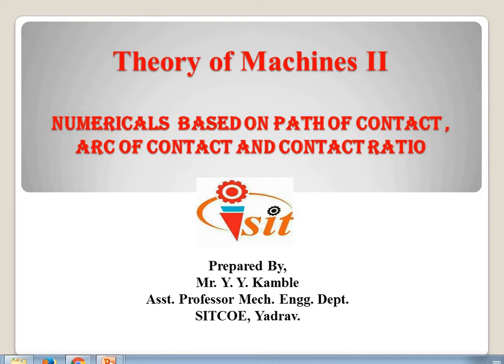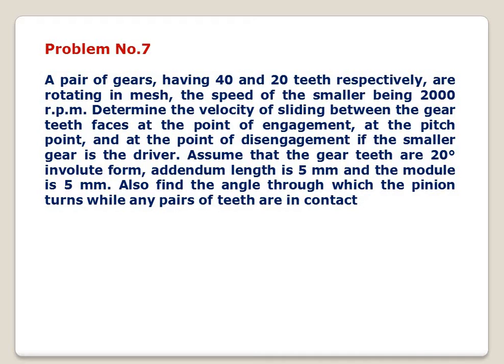Hello friends. Today we are going to discuss another problem of this gear wheel, Problem Number 7. A pair of gears having 40 and 20 teeth respectively are rotating in mesh. The speed of the smaller being 2000 RPM. Determine the velocity of sliding between the gear teeth faces at the point of engagement, at the pitch point, and at the point of disengagement, if the smaller gear is driver. Assume that gear teeth are 20 degree involute form, addendum length is 5 mm, and the module is 5 mm. Also find the angle through which the pinion turns while any pair of teeth are in contact.